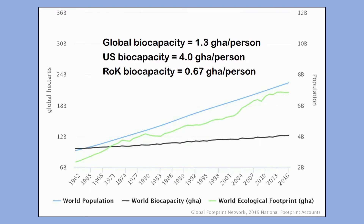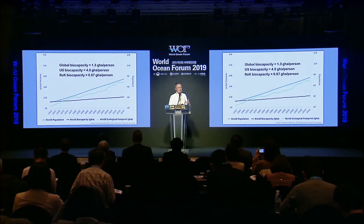We can't keep going on like that forever because eventually we're going to run out of resources. We've been living like this for over 40 years, since the 1970s. This year, our global overshoot day was July 29th — the earliest it's been in the last 40 years. Our global biocapacity per person is 1.3 global hectares per person. In the U.S., we're using four global hectares; Korea is using about 0.7. Our world population is increasing, our footprint is increasing, and we're well above our biocapacity level.